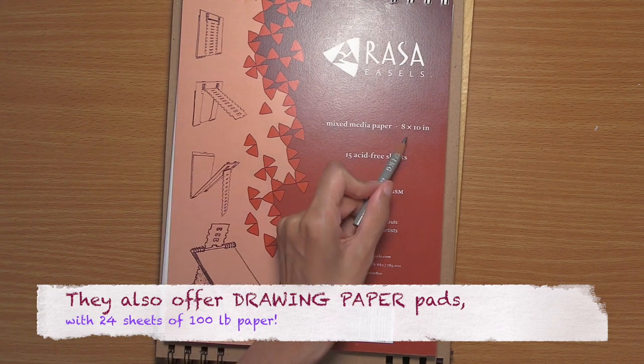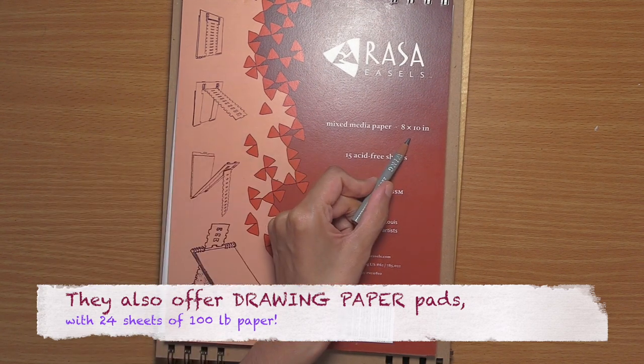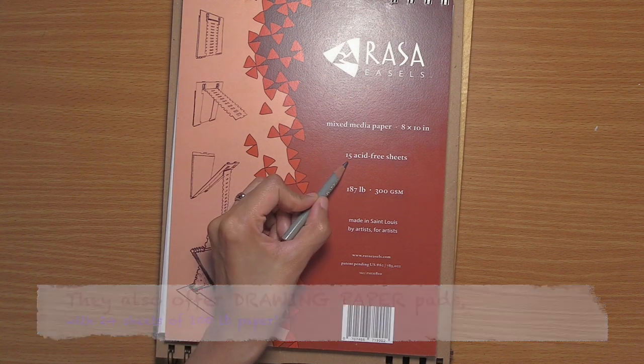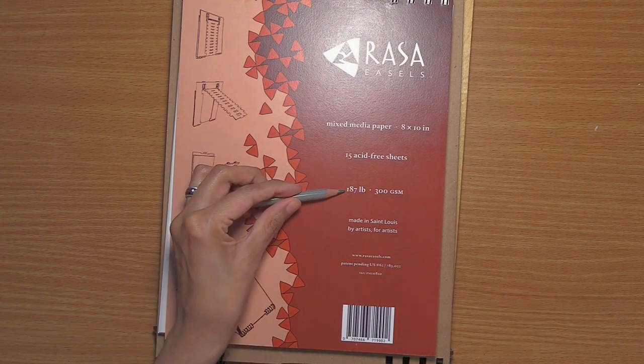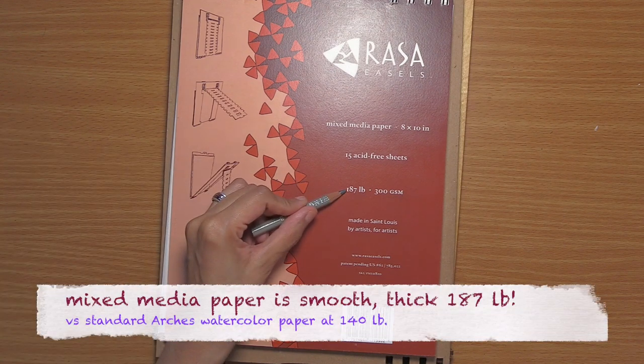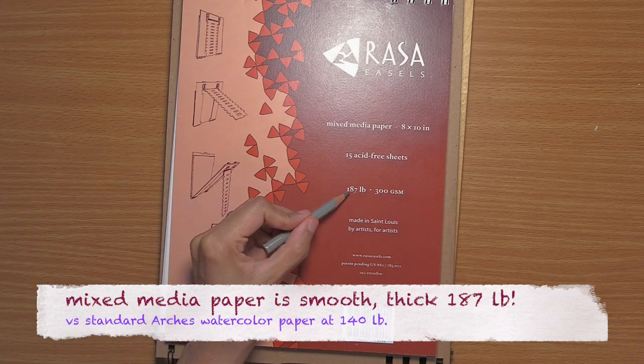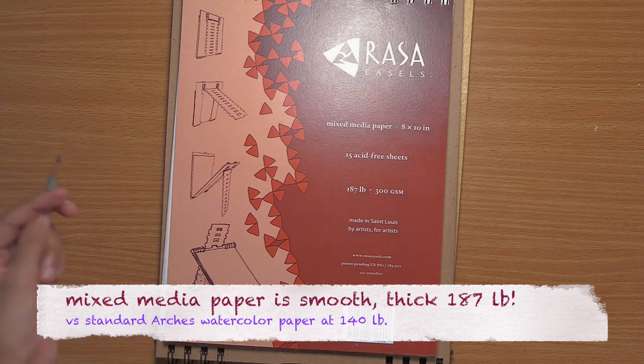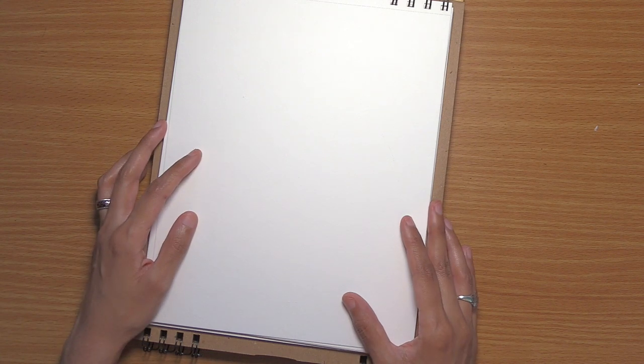Okay, so I'm going to zoom back out so I can talk more about the paper. The one they sent me is a mixed media paper and it's eight by 10 inches. And they also offer it, I think, in a six by eight size as well. And this has 15 acid-free sheets and it's 187 pounds. And that is super, super thick. For comparison, my Arches watercolor paper, that standard watercolor paper, is 140 pounds. So this is that much thicker. This is like another 47 pounds thicker than my Arches watercolor paper. And I really like that it's a really smooth finish. And like, as I said, it's a really thick paper. All the other mixed media paper that I have is usually around 90 pounds. So to have something that's 187 pounds feels really luxurious. And it definitely doesn't have any buckling issues. And it's a pretty robust paper.